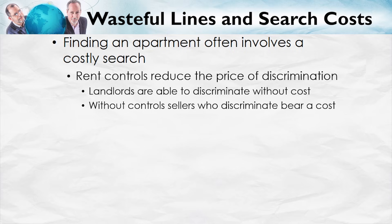Another effect of rent controls is to increase discrimination, because rent controls reduce the price of discrimination. In a free market, landlords might discriminate, but they pay a price because it takes longer to rent out the apartment. But precisely because rent control makes quantity demanded exceed quantity supplied — more people lining up than there are apartments — landlords can more easily and at lower cost pick and choose whom they rent to. Therefore, for minorities, people with children, or others whom landlords might prefer not to rent to, the cost of obtaining apartments is going to be even higher than for the average person.